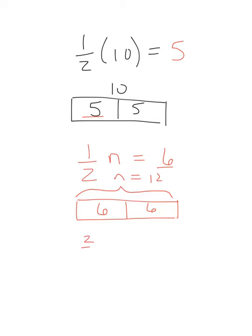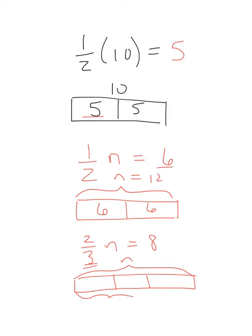What if you had 2 thirds of n is 8? So we have 3 total bars, right? So 2 thirds of it, so this is the whole thing n, 2 thirds. So 2 of these bars is 8. So if 2 of them are 8, wouldn't each one of these be 4? So then we know n must be 12. So 2 thirds of 12 is 8.